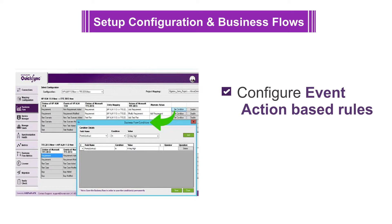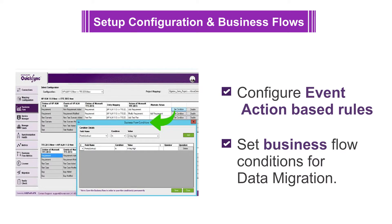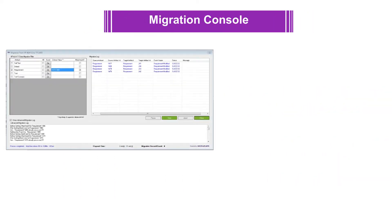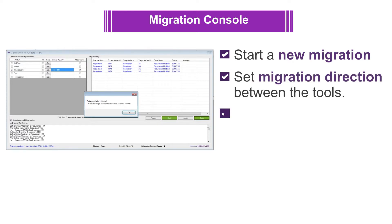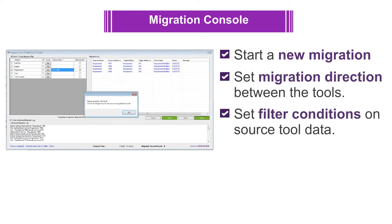Event action-based rules need to be configured and conditions imposed on the business flows for the data migration. The migration console lets you start a new migration, set migration direction between the tools, and set filter conditions on source tool data.